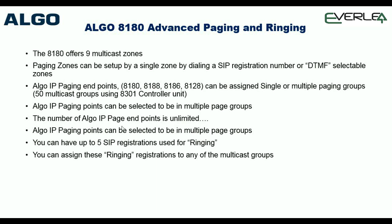The ALGO paging endpoints can be the 8180, the 8188, the 8186, and the 8128 - fundamentally very much the same. Once you get your head around what the 8180 can do, the 8186, which is the bullhorn weatherproof version, is just about identical in regards to functionality.